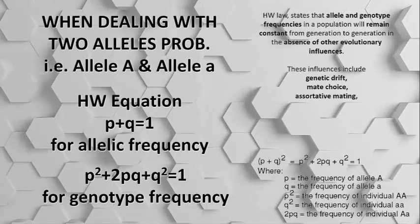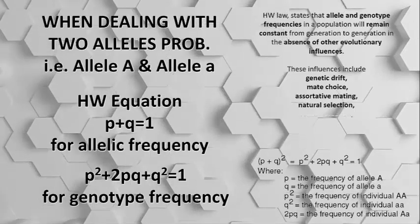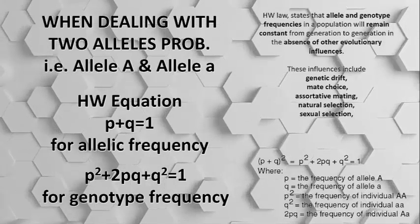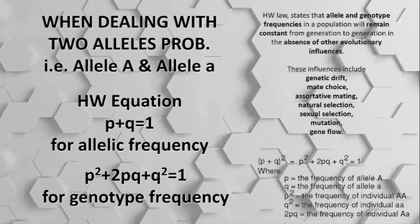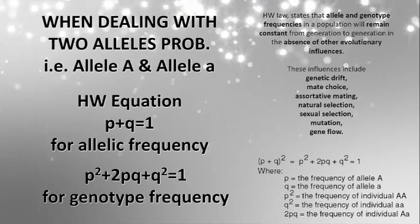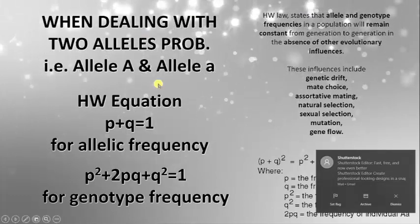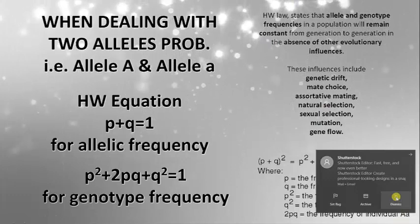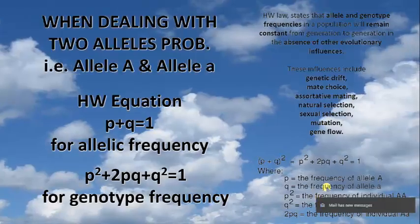This is the Hardy-Weinberg law: allelic and genotypic frequency in a population remain constant from generation to generation if there is no evolutionary influence. Those influences include genetic drift, non-random mating, assortative mating, natural selection, sexual selection, mutation, and gene flow. These are the theoretical basics you already know about.